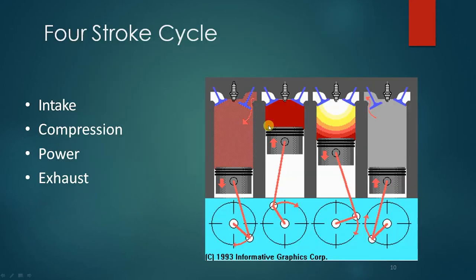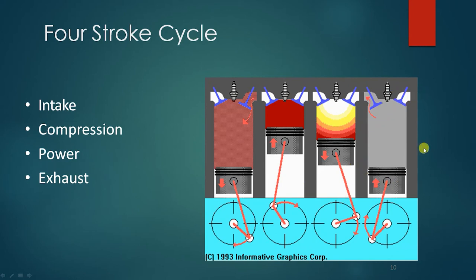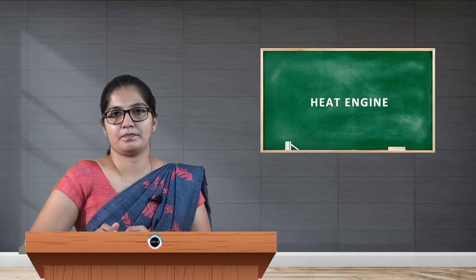This is a sample of a four-stroke cycle, whether it be a petrol engine or diesel engine, that completes its cycle by means of four stages. The first stage is the intake stroke, the second is the compression stroke, the third is the power stroke, and the last is the exhaust stroke. After completion of this cycle, it comes back to the first stage — the intake of fresh fuel. Thank you.